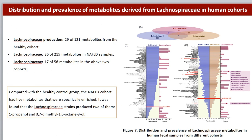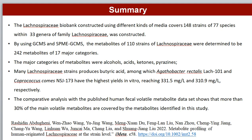Our results show that metabolites of Lachnospiraceae strains were found in both healthy and NAFLD cohorts, showing that Lachnospiraceae strains are active members of the human intestine regarding metabolite contribution. Results imply that they may play both harmful and beneficial roles on host health, which is strain-specific and species-dependent. The Lachnospiraceae biobank covers 148 strains of 77 species within 33 genera.